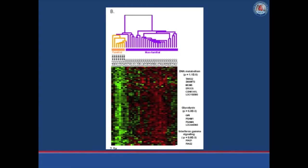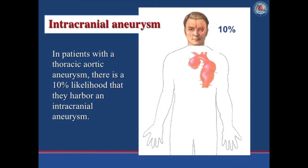Our replication test was also affirmative, though we are not yet ready for clinical application. Importantly, our investigations at Yale have shown that if a patient has a thoracic aortic aneurysm, there is a 10% likelihood that, based on genetics, they also harbor an intracranial aneurysm. We therefore investigate all elective patients for intracranial aneurysms before taking them to the operating room, since an intracranial aneurysm may be just as important for the patient's quality of life as the thoracic aneurysm on which we are focused.